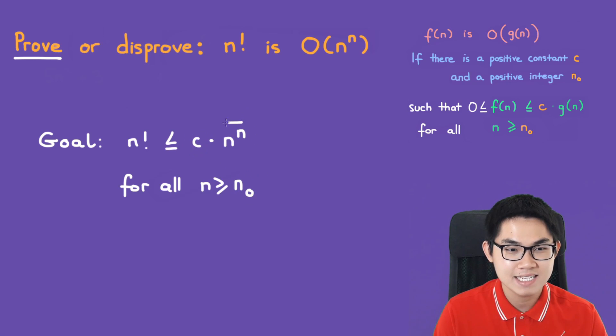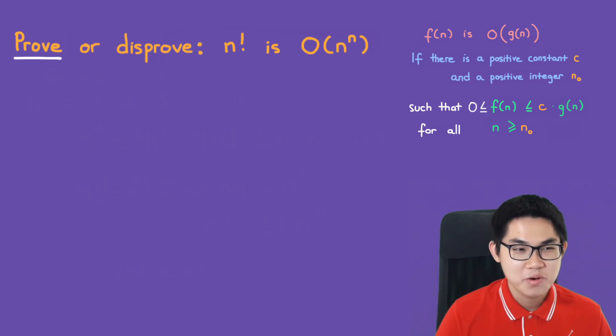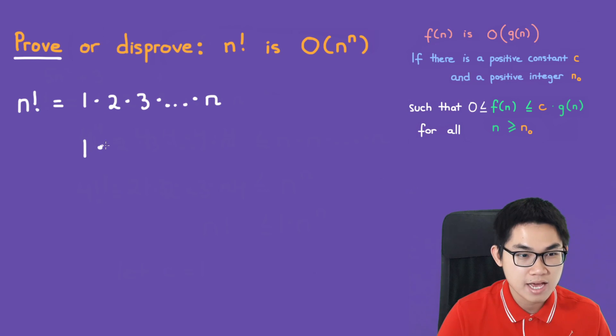We're going to start off with n factorial being equal to 1 times 2 times 3 multiplying until we have n. And we also know that this whole thing is less than or equal to n times n times until n.